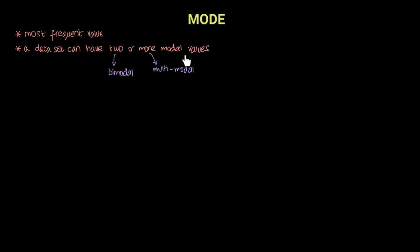A data set can have two or more modal values. If it has two modal values, it is called bimodal. If it has more than two values, it is called multimodal.